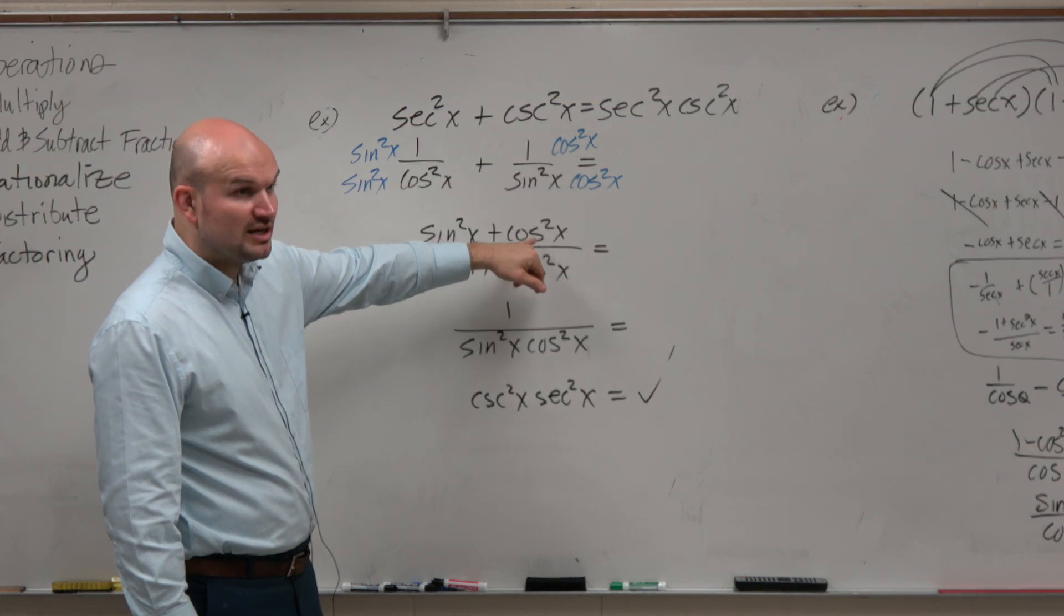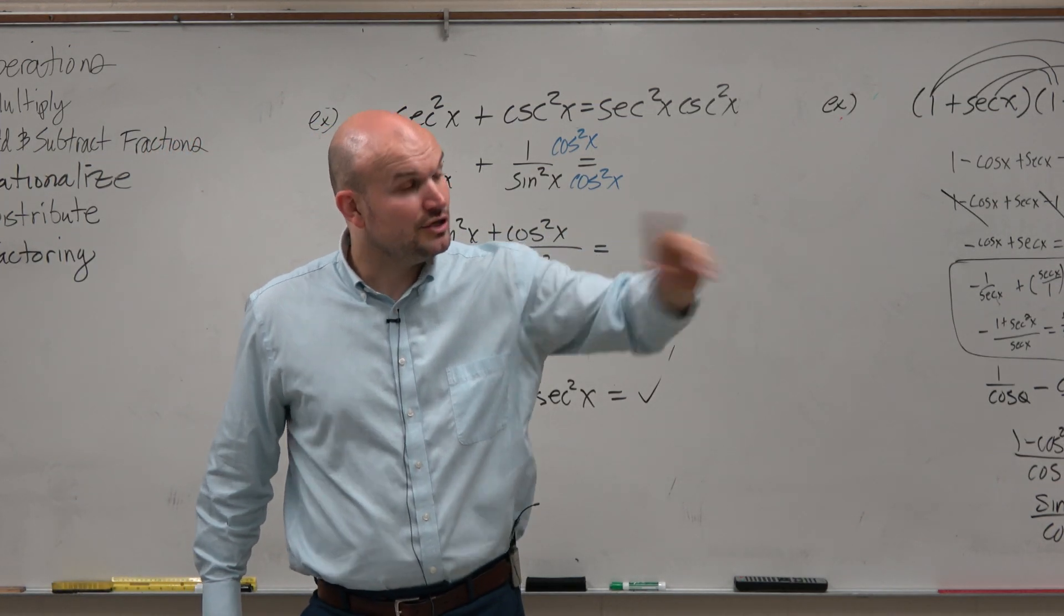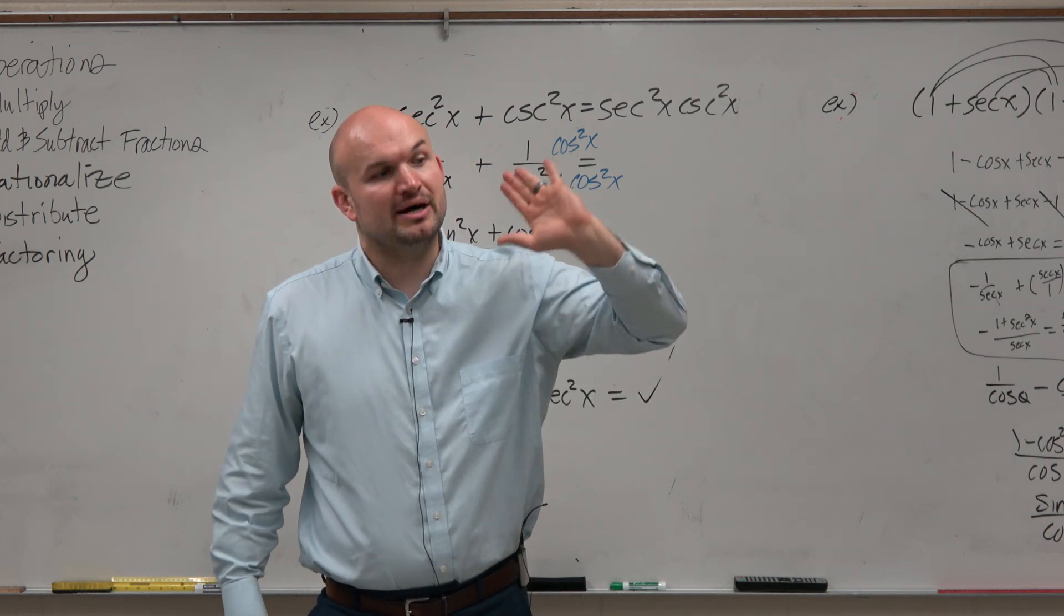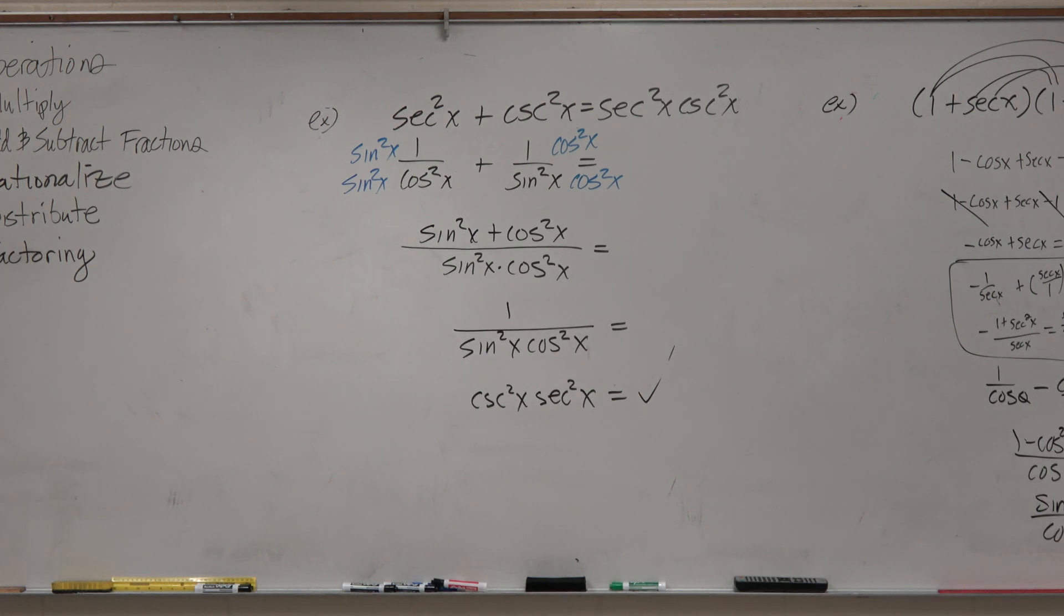Yes? Sine squared plus cosine squared equals 1. It's written right there under Pythagorean. You will be provided, so you don't need to memorize it. But it is good to make sure you get used to recognizing that. All right? Preguntas.